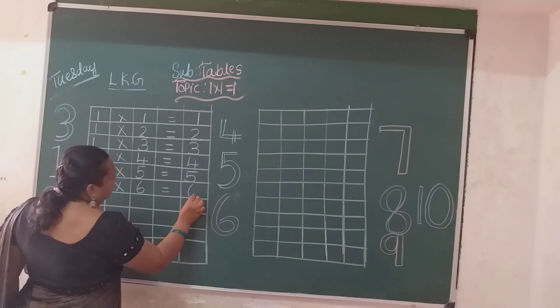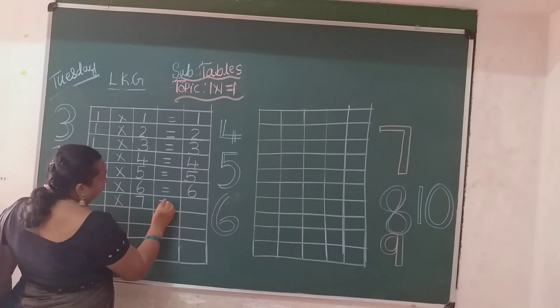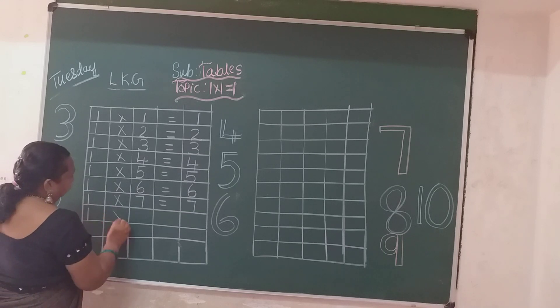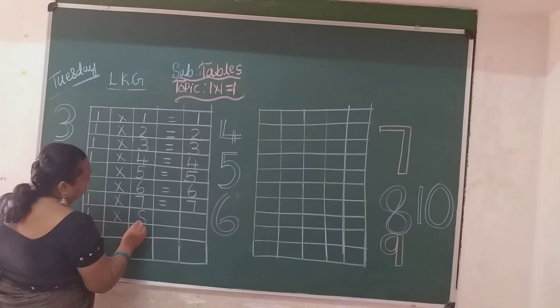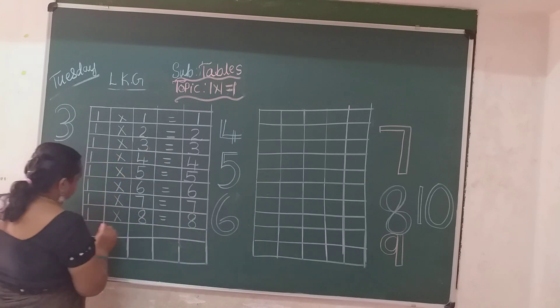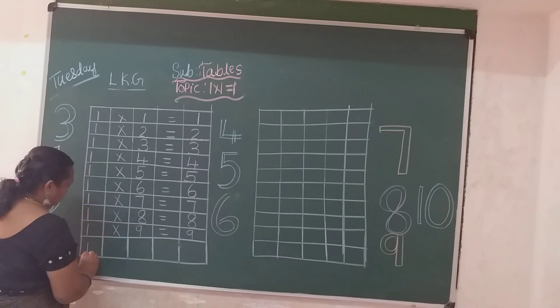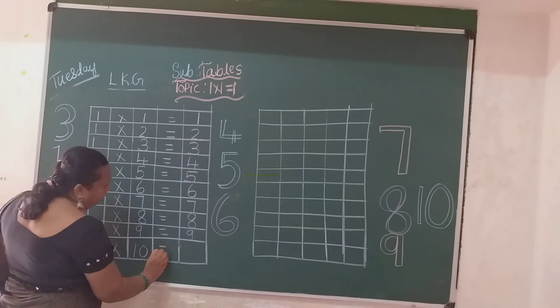One sixes are six. One sevens are seven. One eights are eight. One nines are nine. One tens are ten.